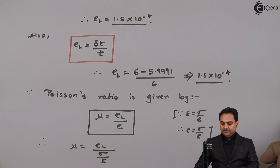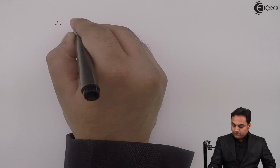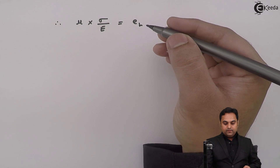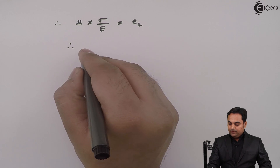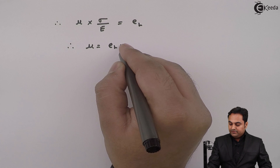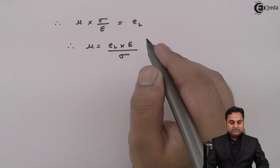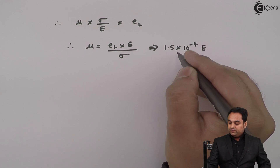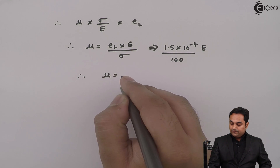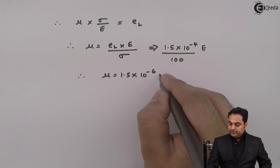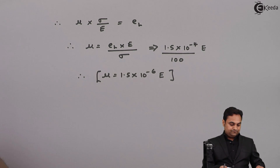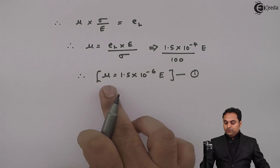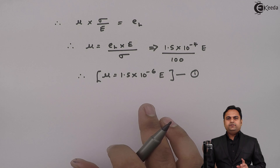Rearranging, mu into stress upon Young's modulus equals lateral strain, so mu equals lateral strain into Young's modulus divided by stress. Lateral strain is 1.5 into 10 raised to minus 4, stress was 100 Newton per mm square, so mu becomes 1.5 into 10 raised to minus 6 into capital E. I will keep this as equation number 1. Both mu and capital E are unknown, so we cannot solve with just this single equation.